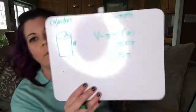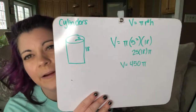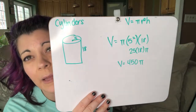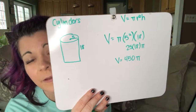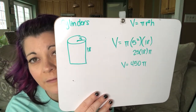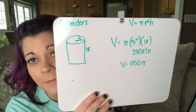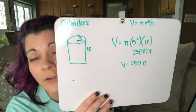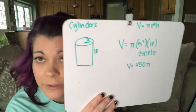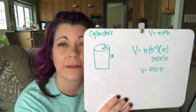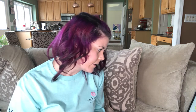So that would be my answer in terms of pi. When I multiply everything out, five squared is 25, 25 times 18 is 450. Now if your teacher does want you to find a decimal answer, then you can just multiply 450 by 3.14.